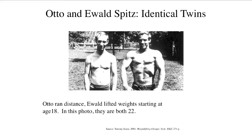Here's an example from humans — two identical twins, two members of a human clone. Otto ran distance; Ewald lifted weights, starting at age 18. Four years later, at age 22, look at the difference in their phenotypes — these are very different looking people. And that is entirely a plastic response to exercise and diet.